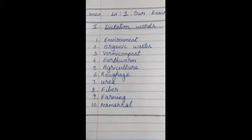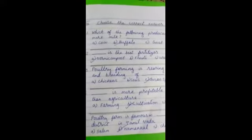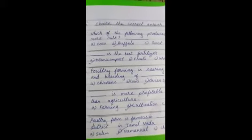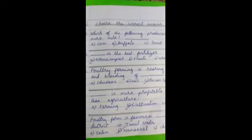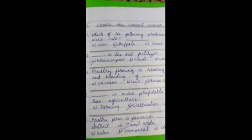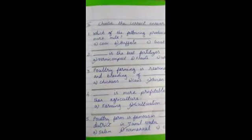Then turn the page. Put Roman numeral 2, choose the correct answer. Put number 1. Which of the following produces more milk? Option A, cow. Option B, buffalo. Option C, goat. Answer is buffalo. Put a tick in the B.